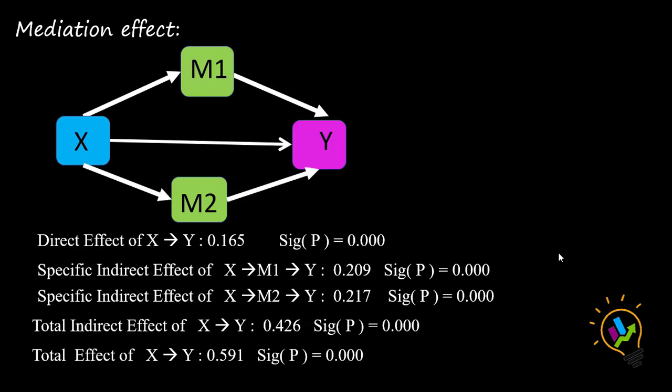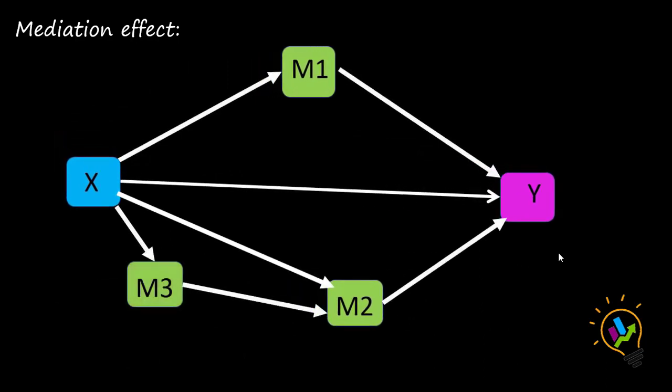So when you have more than one mediation variable, you must check the specific indirect effect. When you have only one mediation variable, you check only the indirect effect. In this example, both M1 and M2 have a significant mediation effect between X and Y. Now there is one more example with a third mediation variable M3, where M3 is not directly between X and Y — it goes X to M3, M3 to M2, and then to Y. Think about how you would find the mediation effect of M3 in this model and write your opinion in the comment box below.